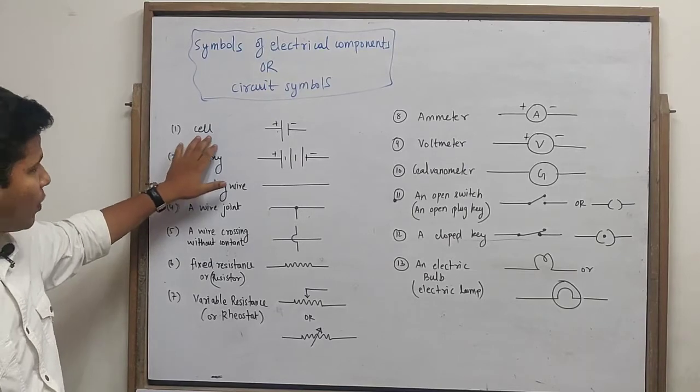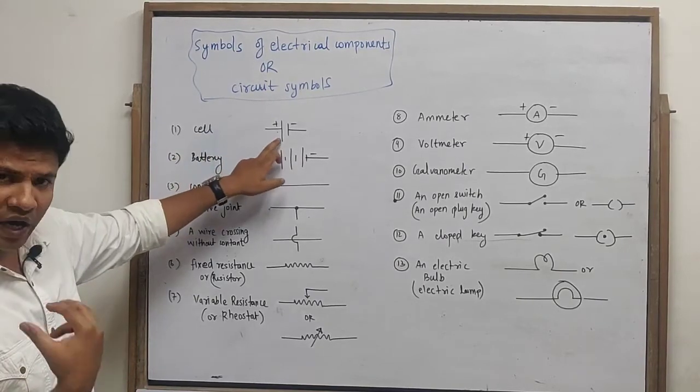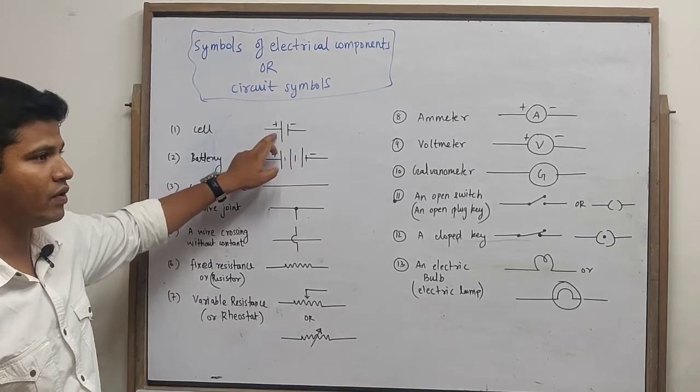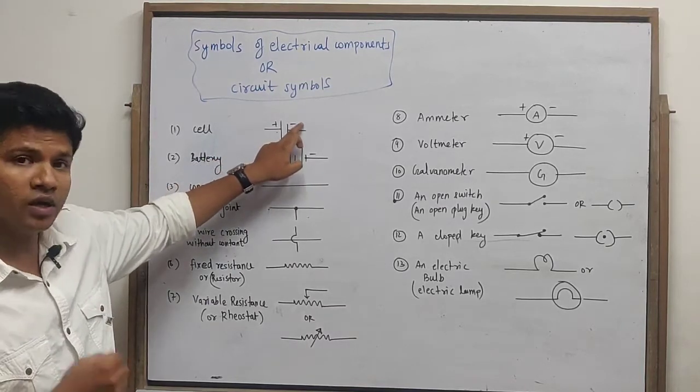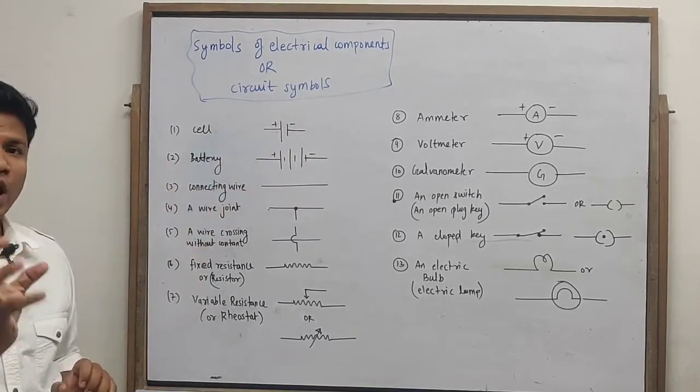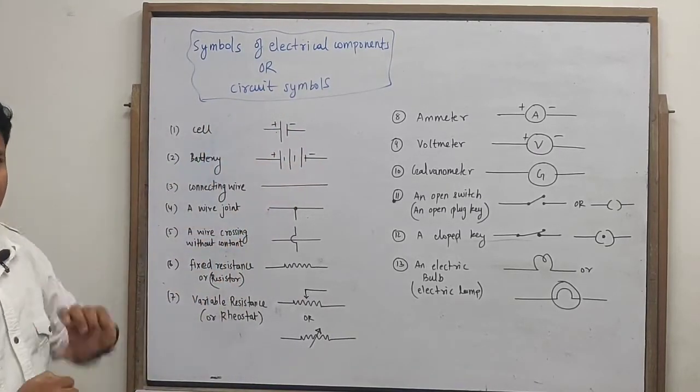This is a cell. If you can see a cell, we represent a big line and a small line. The big one is positive and the small one is negative. So we can see a cell in the circuit. You can say that it is a cell.